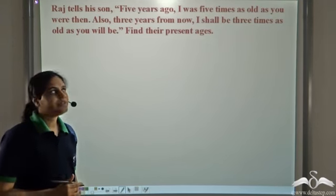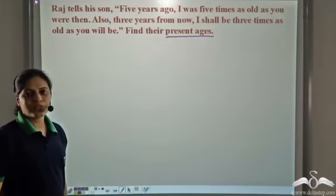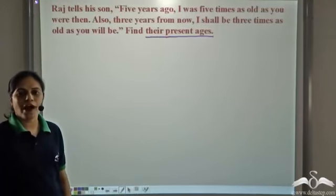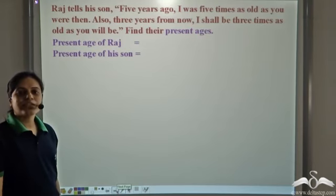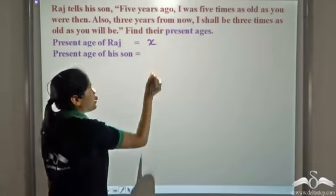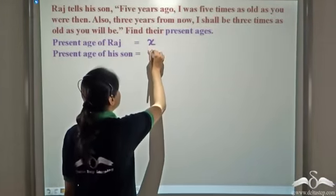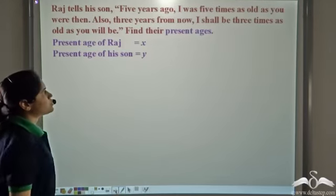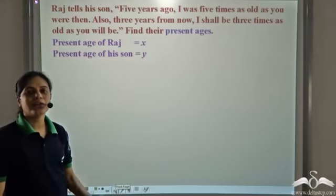So what is the unknown? The unknown is their present ages — the present age of Raj and the present age of his son. These are the two unknowns. So let us denote the present age of Raj by variable x and the present age of his son by another variable y.